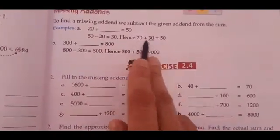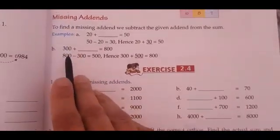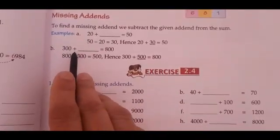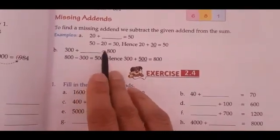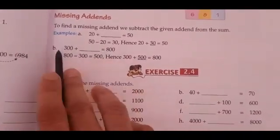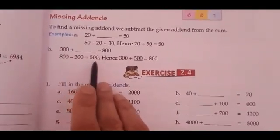See another example: 300 plus dash equals 800. So what should be added? That means out of 800, if you subtract 300, 800 minus 300 gives you 500.